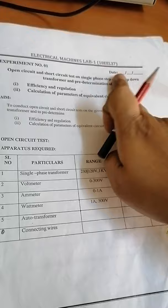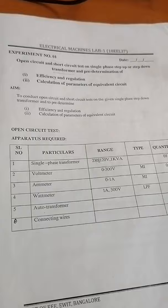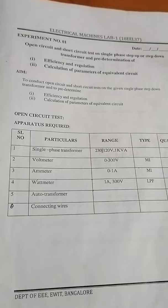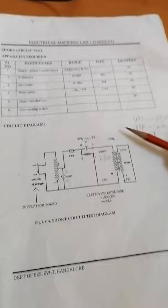Open circuit and short circuit test on a single phase step up or step down transformer — you can do it with any rating, but in the laboratory we are going to use 1 kVA or 2 kVA. Today I am going to use a 1 kVA transformer. We have rigged up for the short circuit test. The circuit diagram is as shown in the figure.